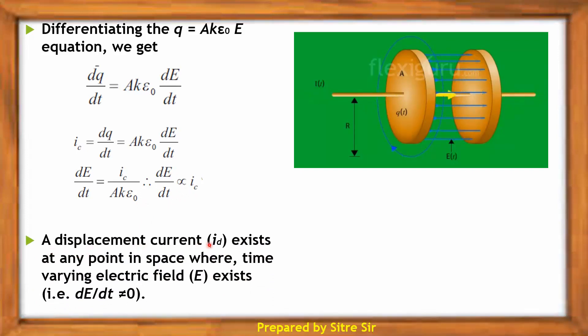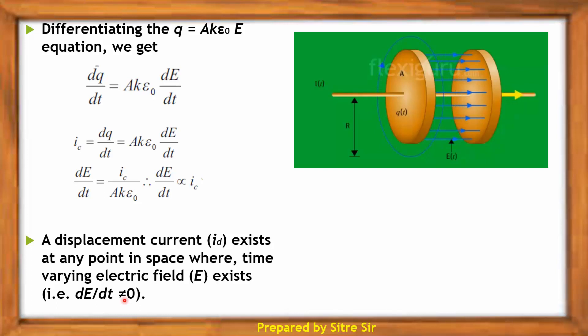Therefore, displacement current ID exists at any point in space where a time-varying electric field E exists, that is where dE/dt is not equal to zero.